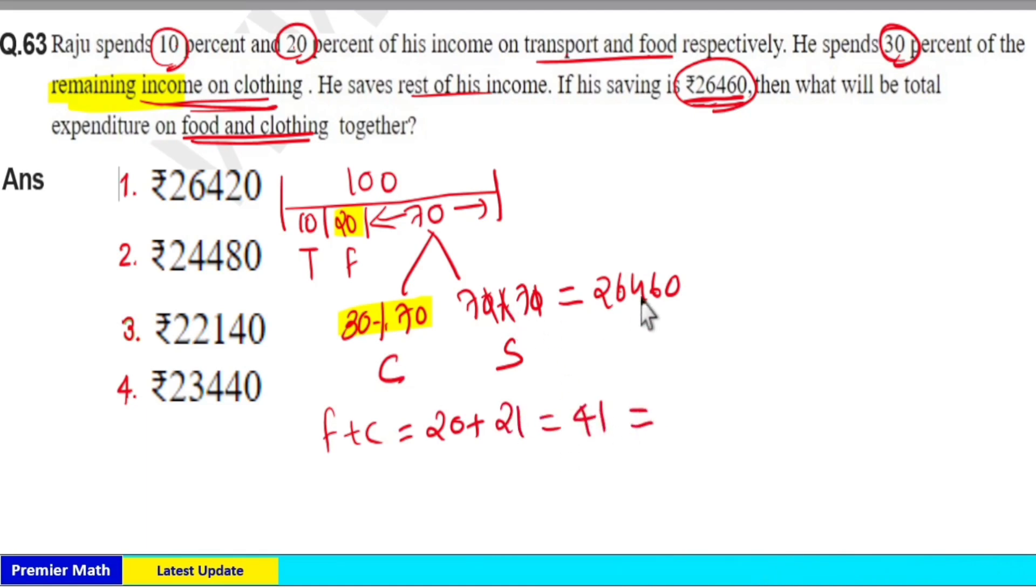49 rupees is 26,460, then 41 rupees is equal to 26,460 divided by 49 into 41. 7 goes 7 times in 49, 3 times in 21, 7 times in 49, 8 times in 56, remaining 0. Again 7 goes 5 times in 46, remaining 0.